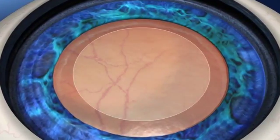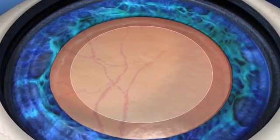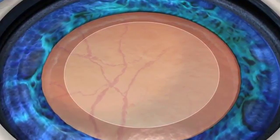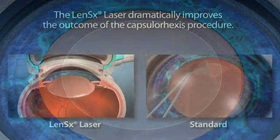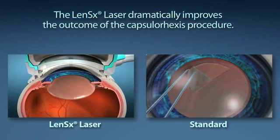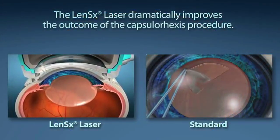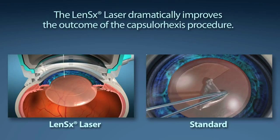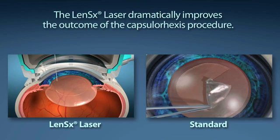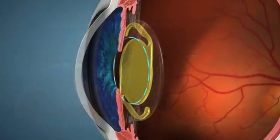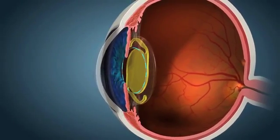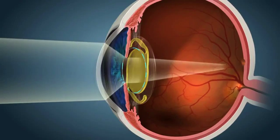Capsular axis is the single most important step in your visual outcome. In standard cataract surgery, this step is performed by the surgeon manually creating a circular opening with a handheld instrument. The LensX laser offers your surgeon laser precision to create the circular opening and allows the lens placed to have the best possible effective lens position. This allows the patient to experience the most predictable post-operative visual results.